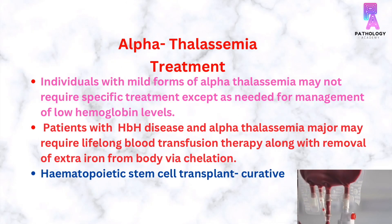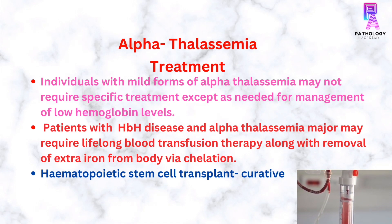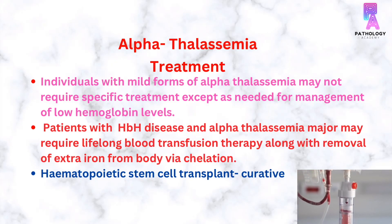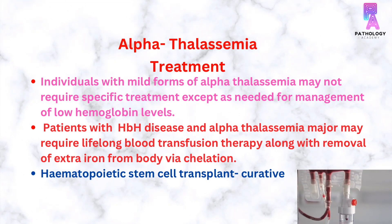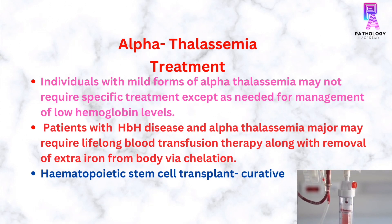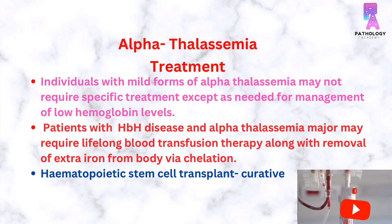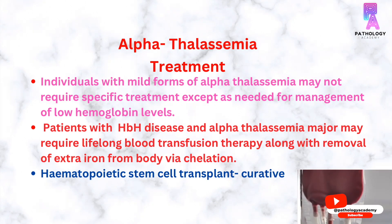The treatment of alpha thalassemia: individuals with mild forms may not require any specific treatment except for management of low hemoglobin levels. Patients with HBH disease and alpha thalassemia major may require lifelong blood transfusion therapy along with removal of extra iron from the body via chelation. Hematopoietic stem cell transplant is the ultimate cure for patients with hemoglobin H disease and alpha thalassemia major.